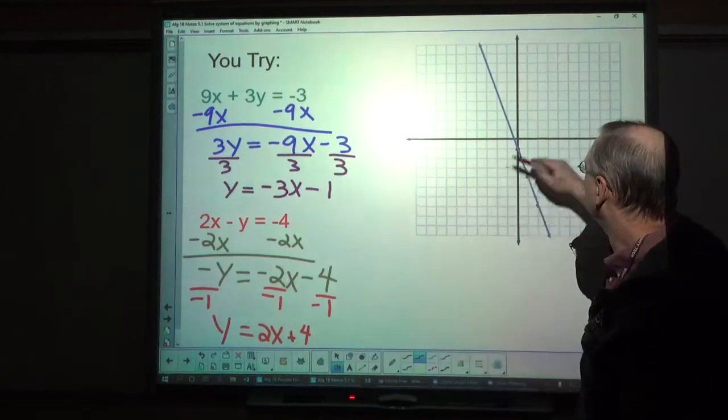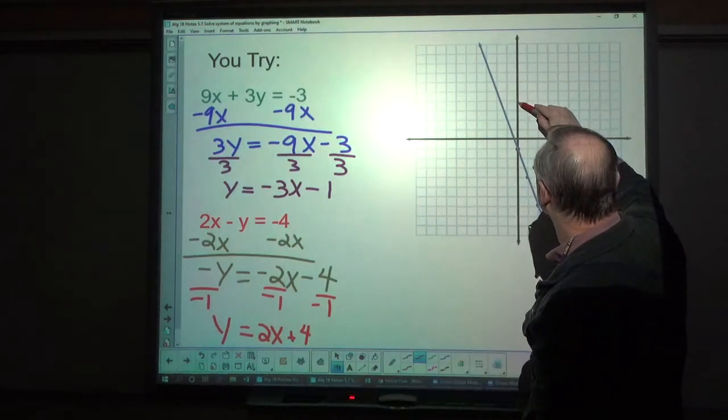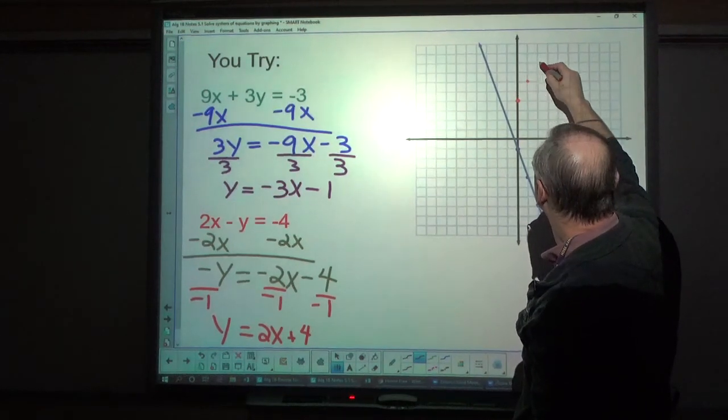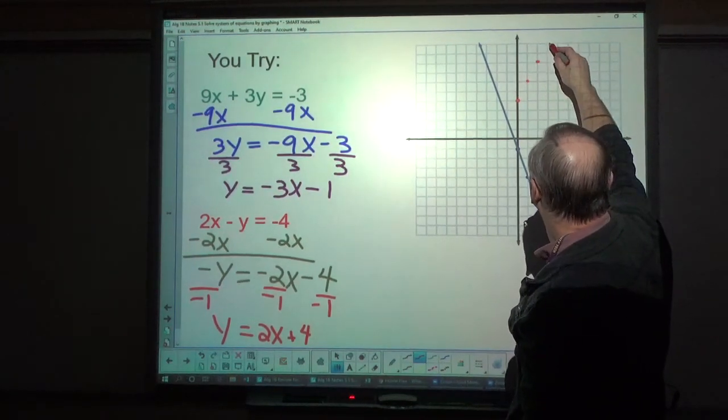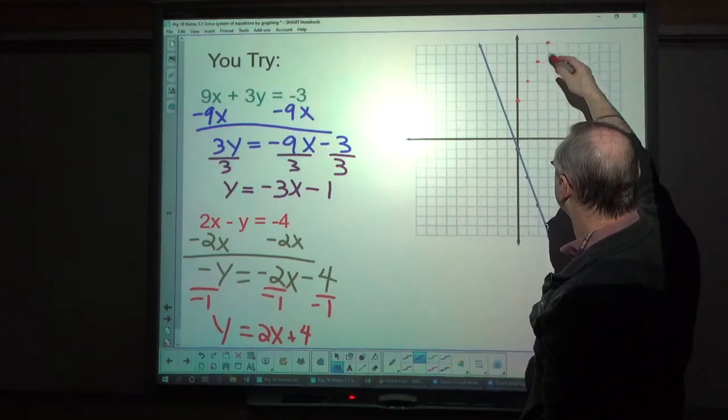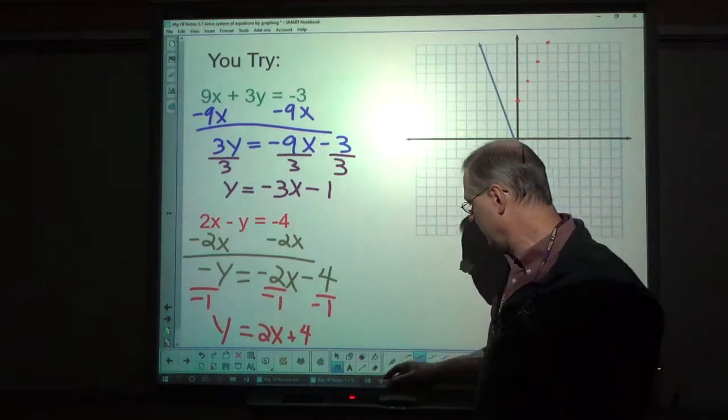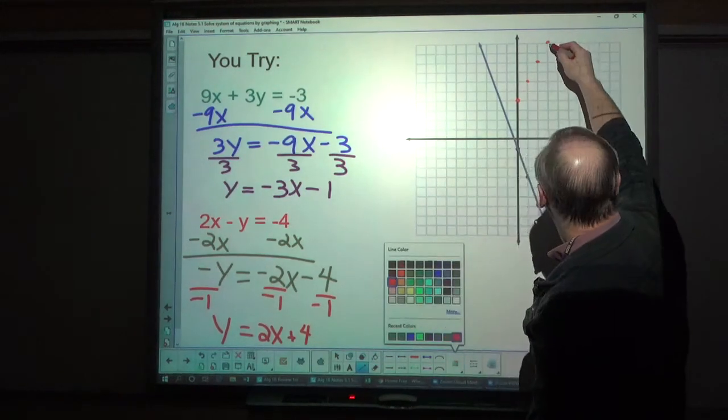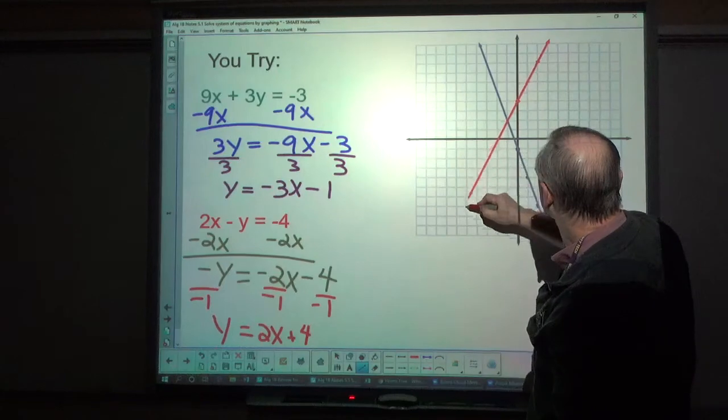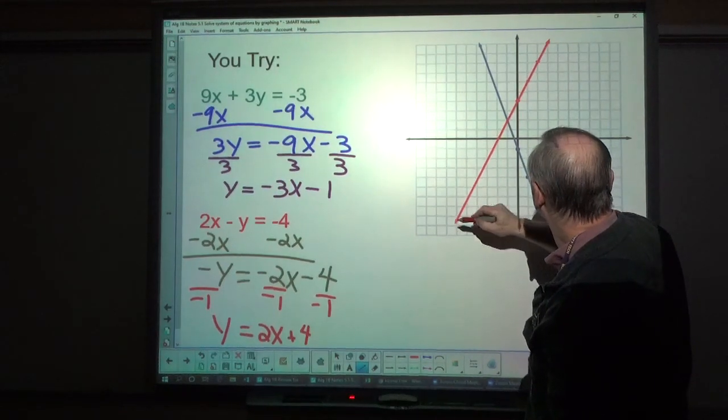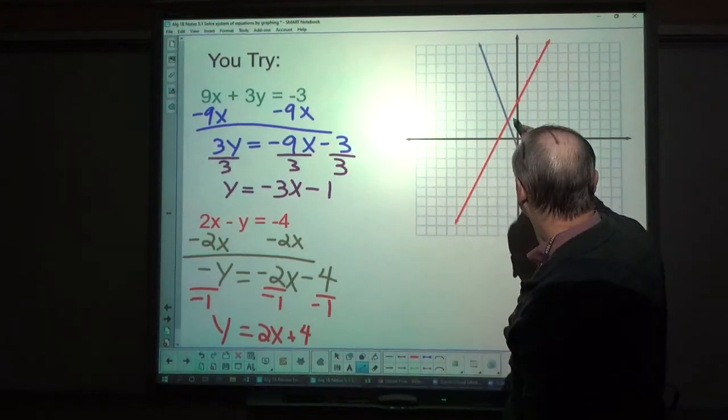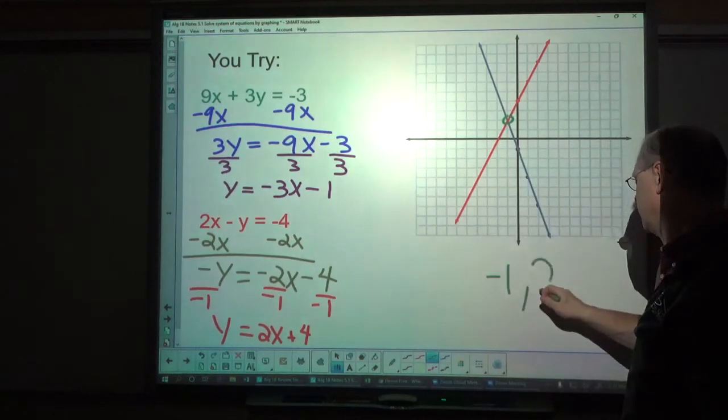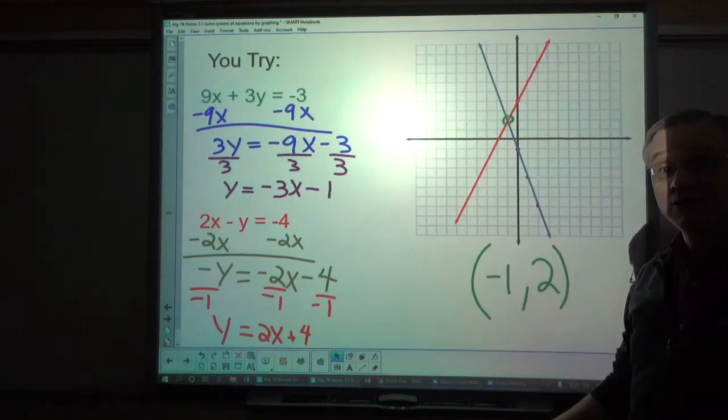And then up 4: 1, 2, 3, 4. And then every time I go up 2 to the right 1. Now, that didn't actually intersect from my dots, but it will intersect when I draw my line. It starts here and goes down through. And you can see the intersection is right here at negative 1, 2. That's how you do it.